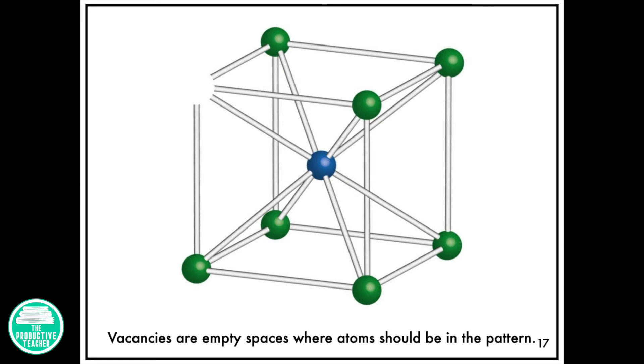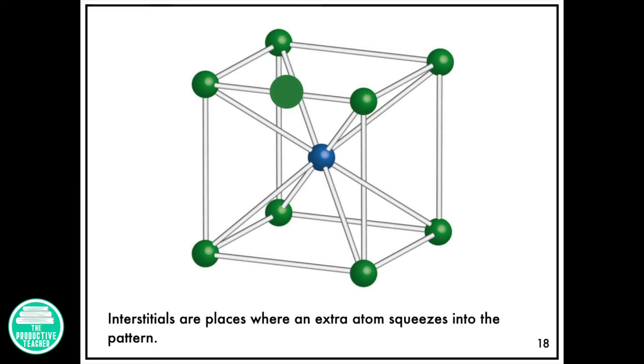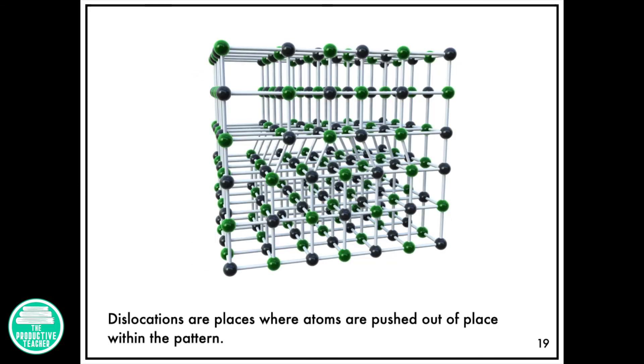Vacancies are empty spaces where atoms should be in the pattern. Interstitials are places where an extra atom squeezes into the pattern. Dislocations are places where atoms are pushed out of place within the pattern.